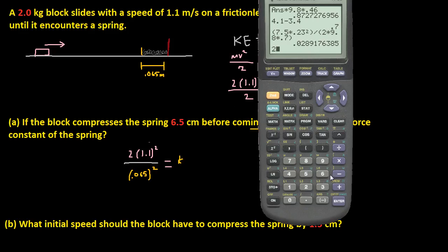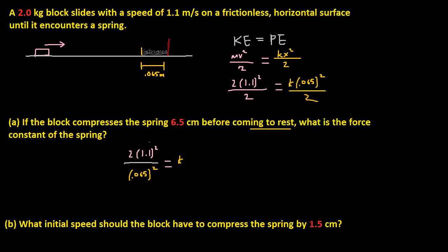So 2 times 1.1 squared, all over 0.065 squared. And we get k is equal to 572 point... So I'm going to store that to k, actually. So k is equal to 572.8, I'm just going to say 572.8 newtons per meter. Alright. Now let's go to part B.